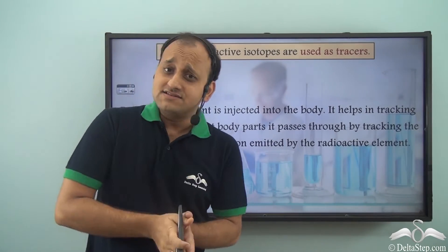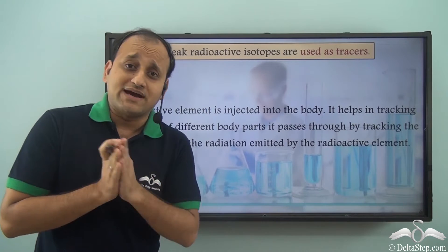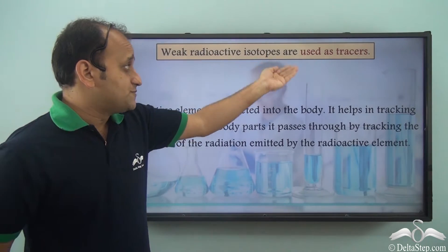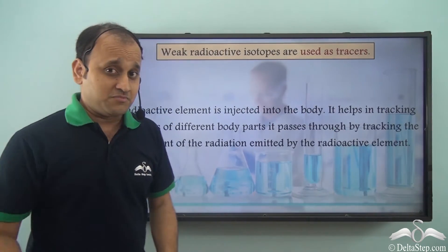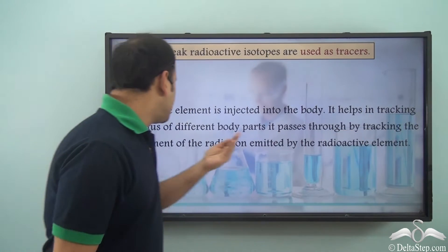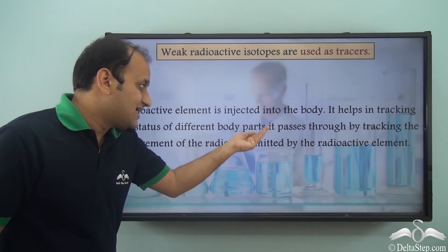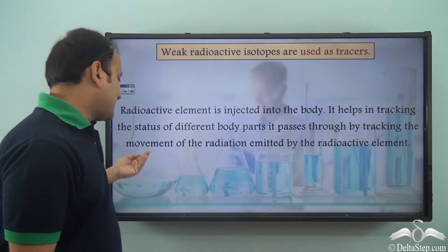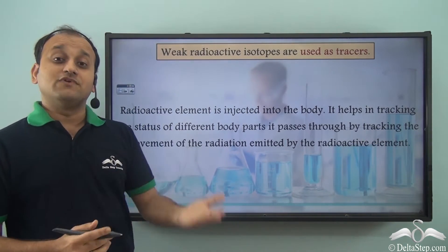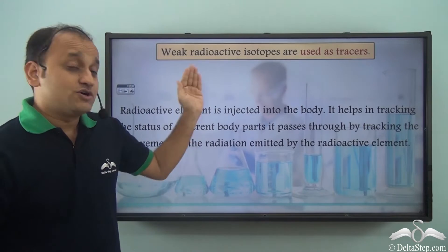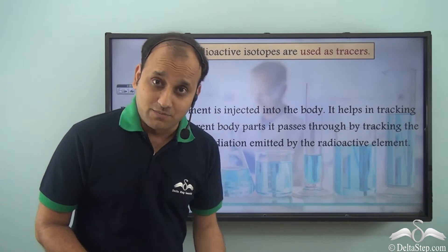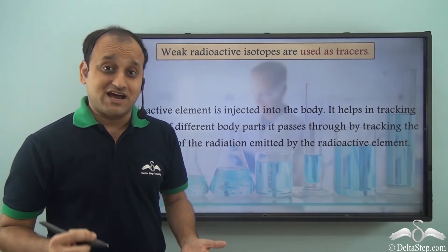Treatment of cancer is not the only application of radioactivity. Weak radioactive isotopes are also used as tracers. A radioactive element is injected into the body, and it helps track the status of different body parts it passes through by tracking the movement of the radiation it emits — in the form of alpha, beta, or gamma radiation.